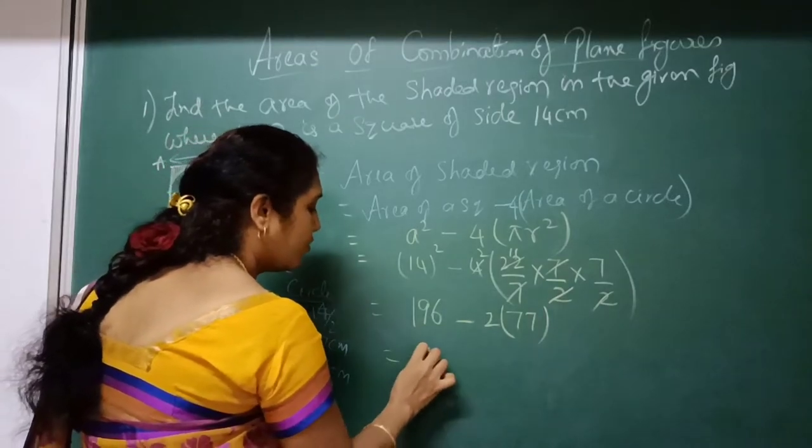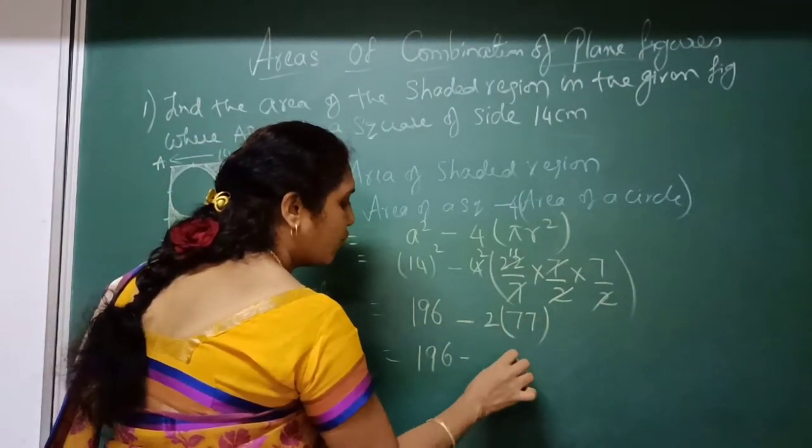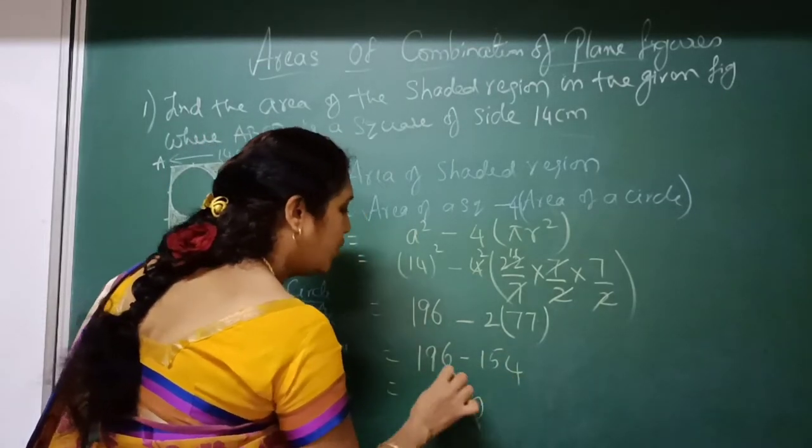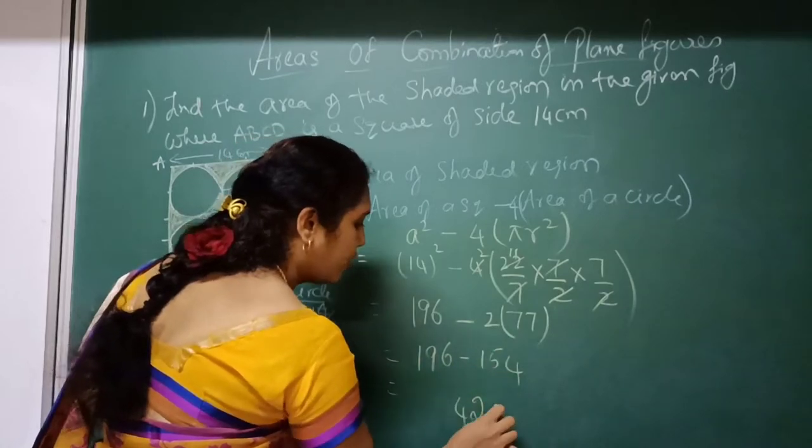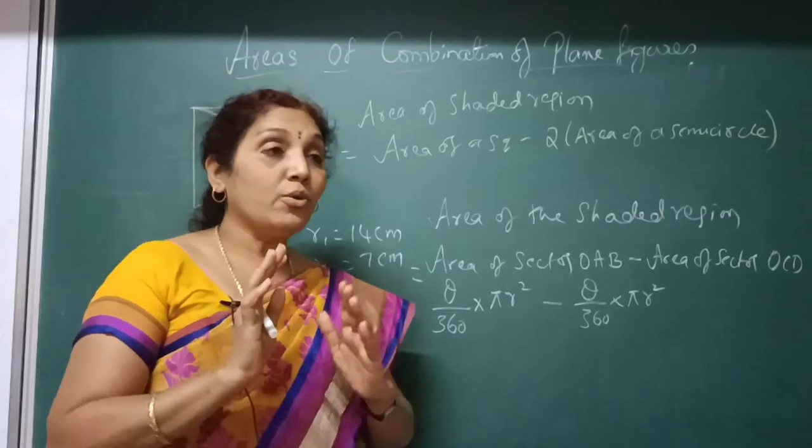77. This is equal to 196 minus 154. If you are subtracting, 6 minus 4 is 2, 9 minus 5 is 4. 42 cm square. Look here children.